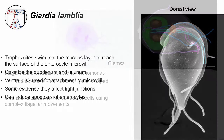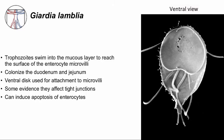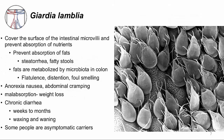The trophozoite is swimming and cruising around on the surface of your intestine to find a place to attach. The green ventral disc allows attachment. When the trophozoite finds a place to adhere, it uses the ventral disc as a suction cup, grabbing onto the microvilli of the enterocyte and holding on very tightly. It prefers to attach to microvilli in the duodenum and jejunum. Trophozoites can disrupt tight junctions between cells and can also induce apoptosis, both of which can potentially lead to diarrhea.